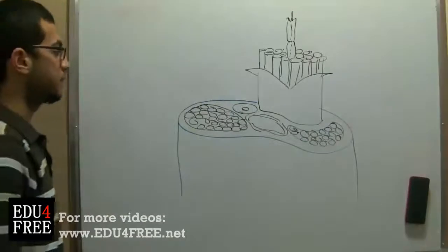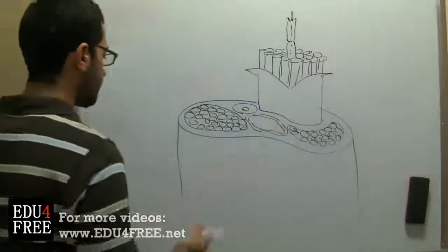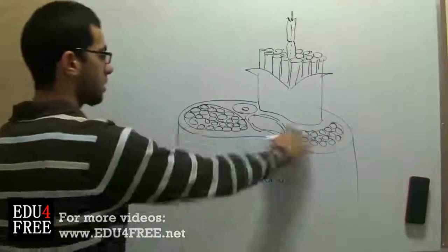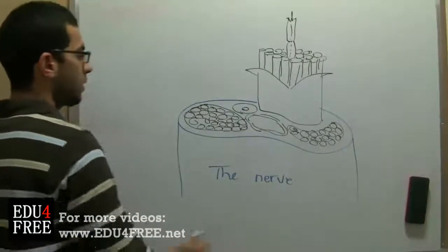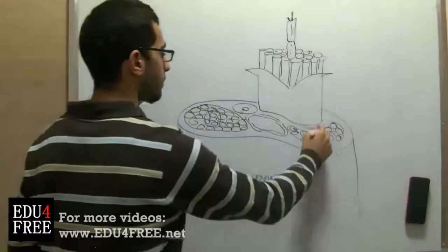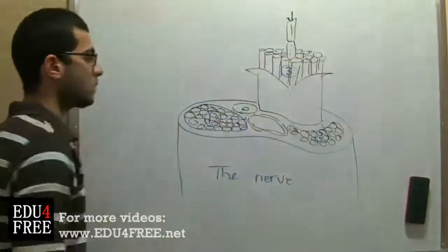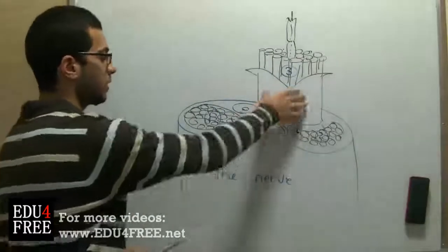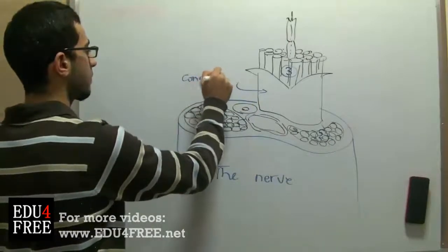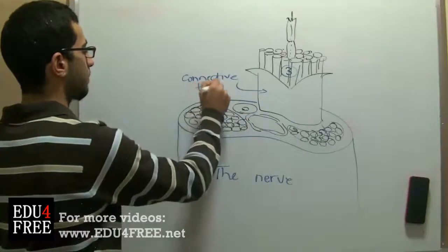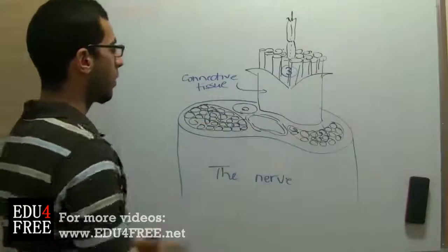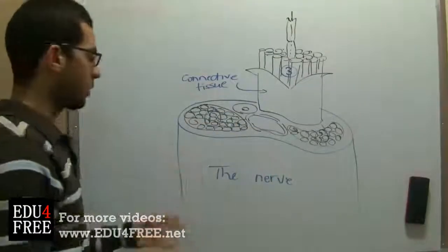So as we can see here, this is the nerve, and this is a section in the nerve, and here we have three nerve bundles, one, two, and three, so each nerve bundle is coated with a connective tissue, and the nerve bundles here are all coated with one connective tissue in order to form the nerve.